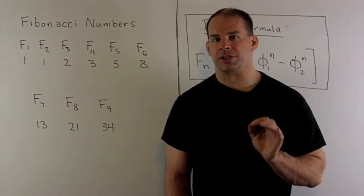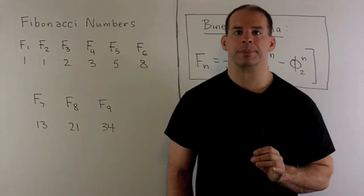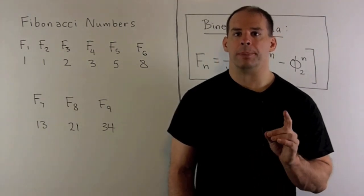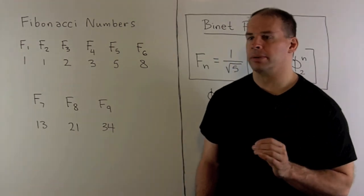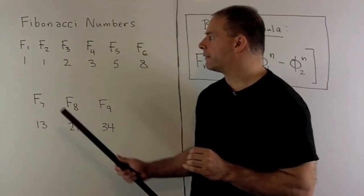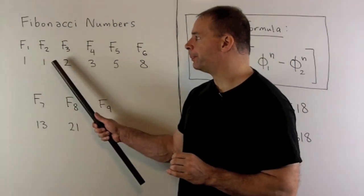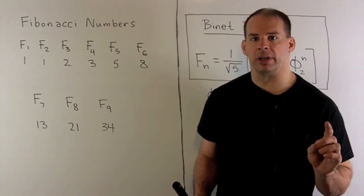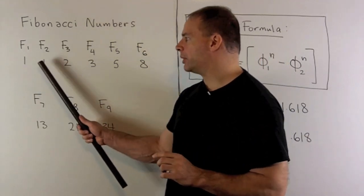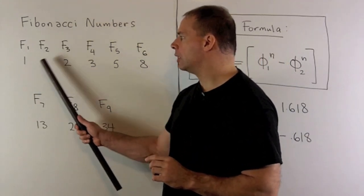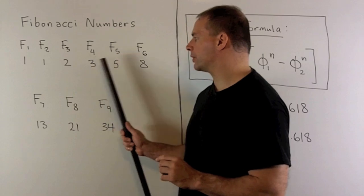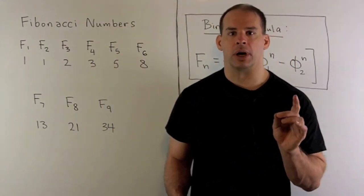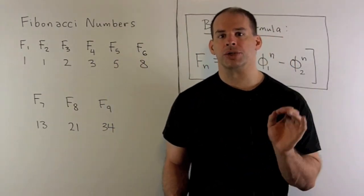If you're not yet sold on diagonalization of matrices, here's a nifty example. Start with the Fibonacci numbers. The first two numbers are going to be equal to 1. To get the next number in the sequence, we just add the previous two. So 1 plus 1 is 2, 1 plus 2 is 3, 2 plus 3 is 5, and so on. We have a recursive sequence.